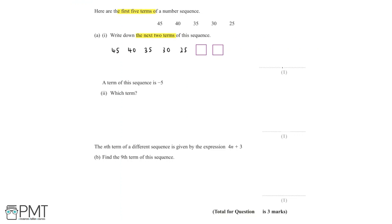To get from 45 to 40, we take away 5. To get from 40 to 35, we take away 5. To get from 35 to 30, we take away 5. And to get from 30 to 25, we take away 5.